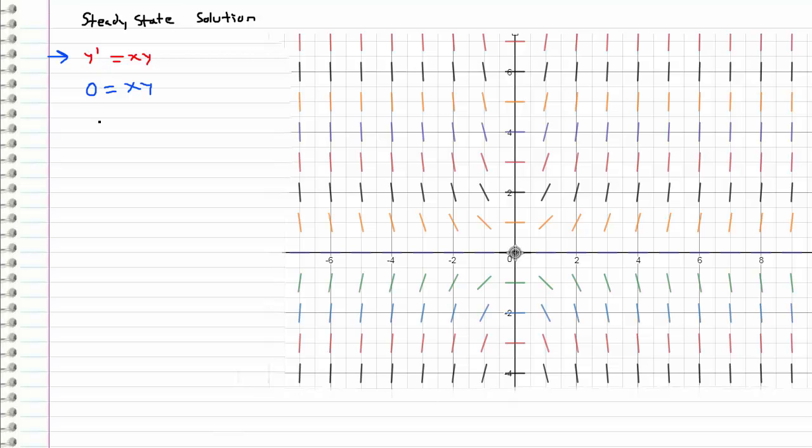So we just substitute in 0 for y prime and we get 0 equals x times y, which gives us two possible solutions: one when x equals 0 and another when y equals 0.